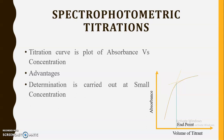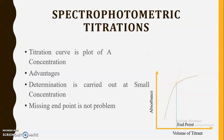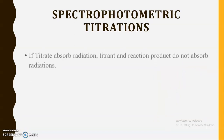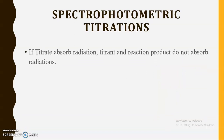The advantages of spectrophotometric titrations are: the determination is carried out at very small concentrations, even in nanograms. We can determine substances using this method which is not possible with conventional titration. Also, missing the endpoint is not a problem because we are not carrying out visual inspection. There are four different types of spectrophotometric titrations.